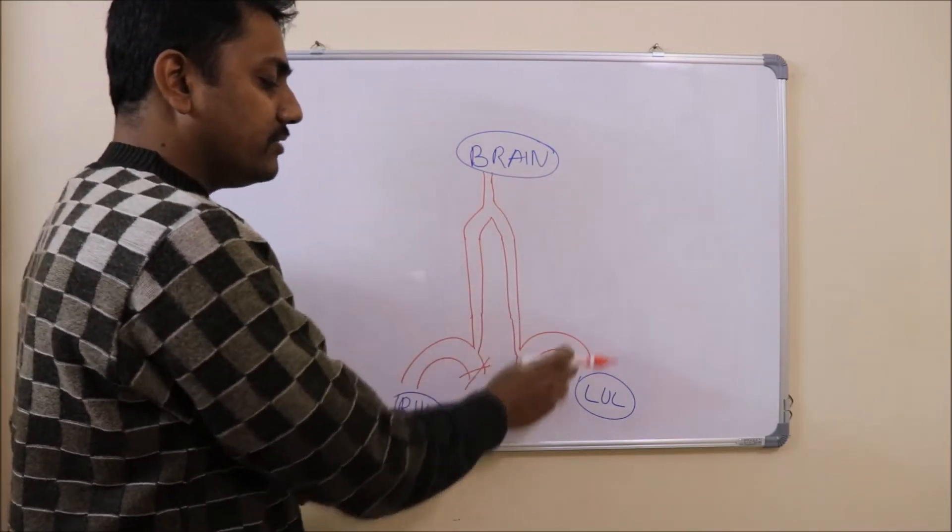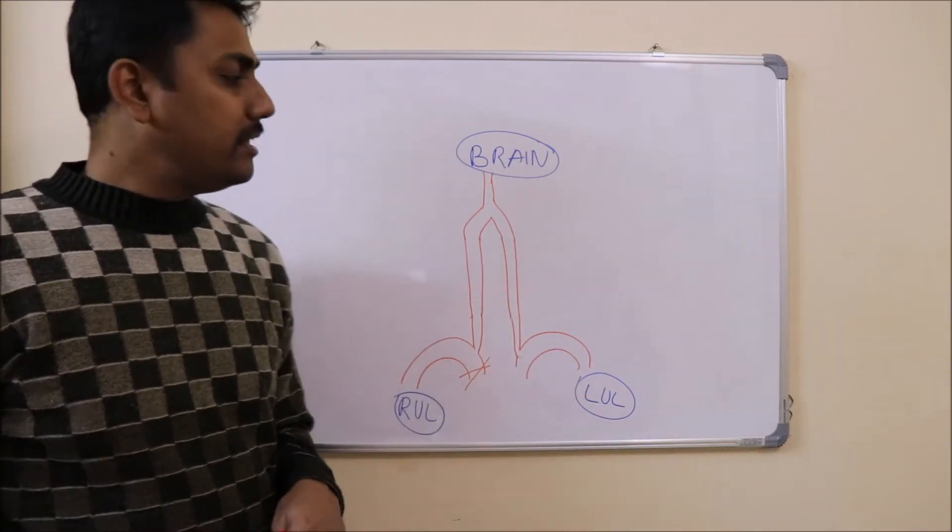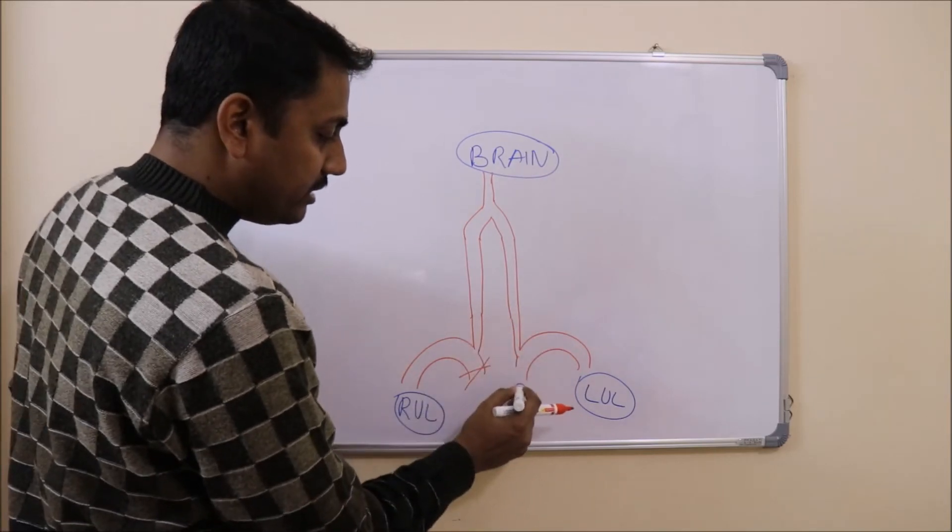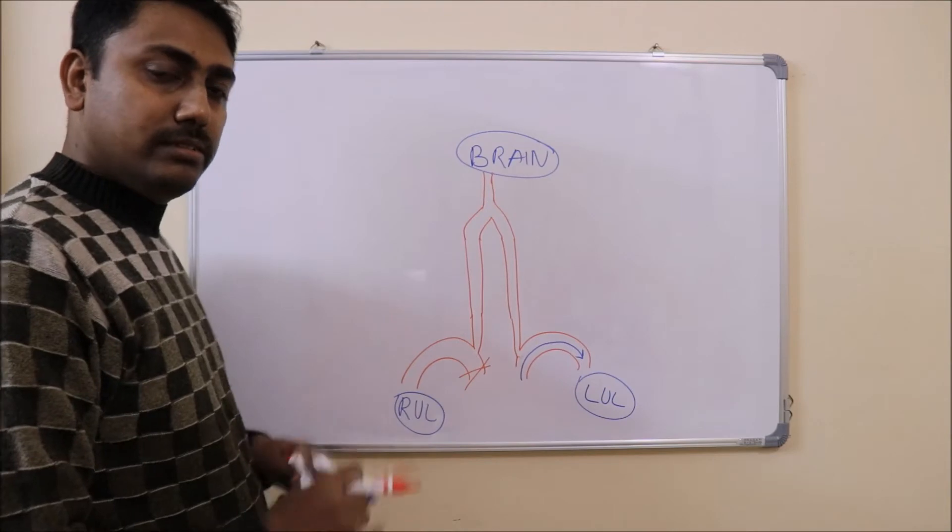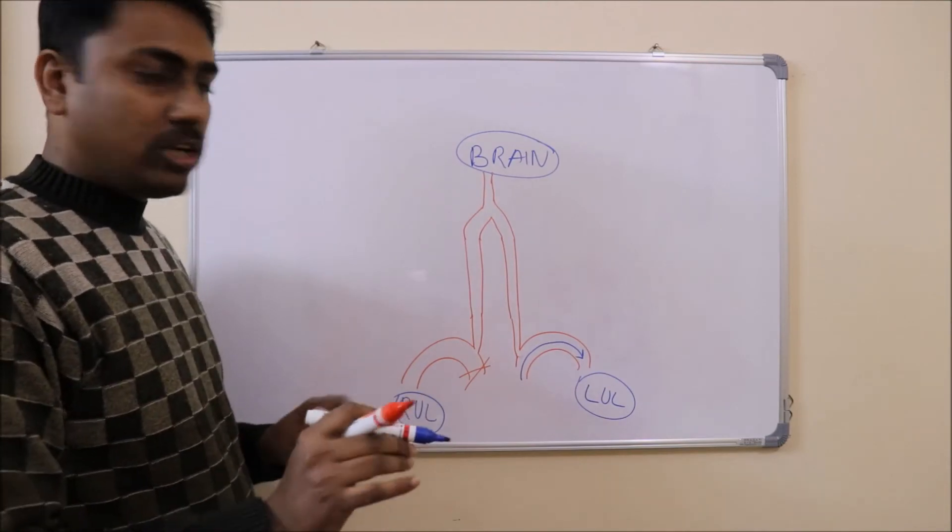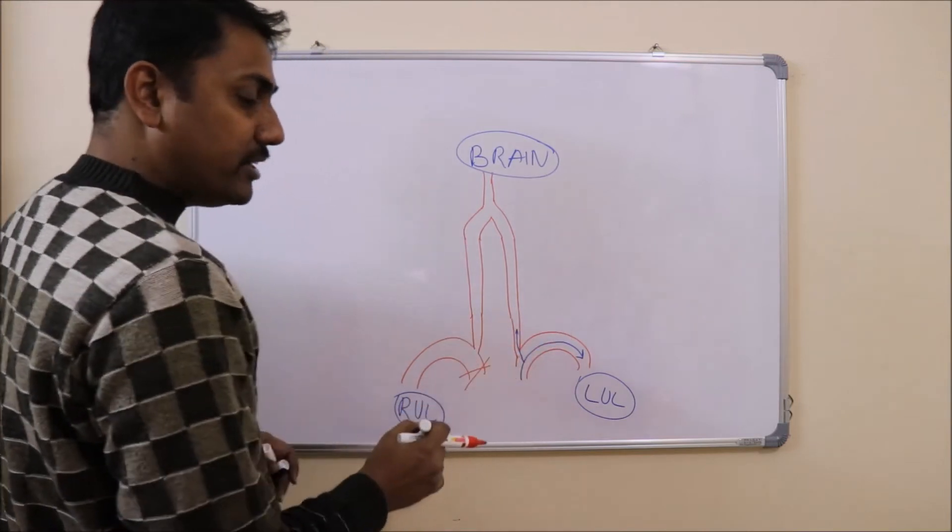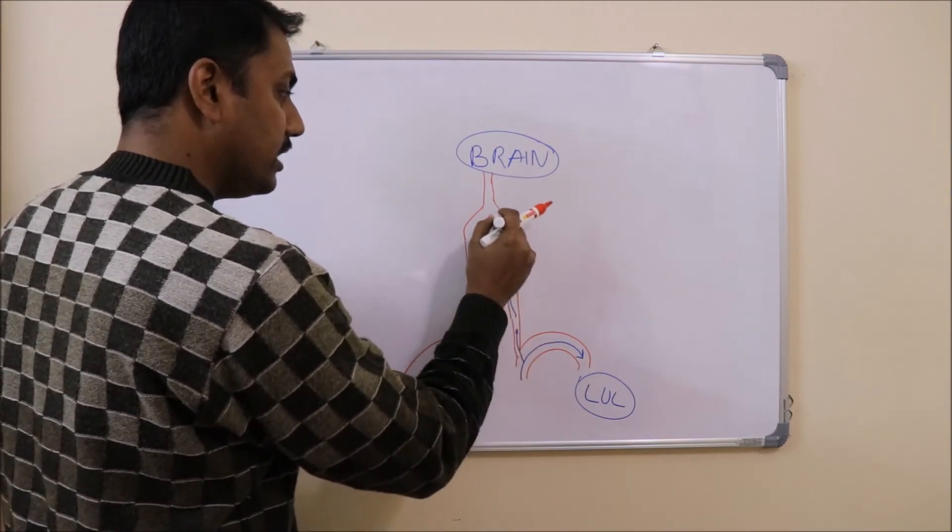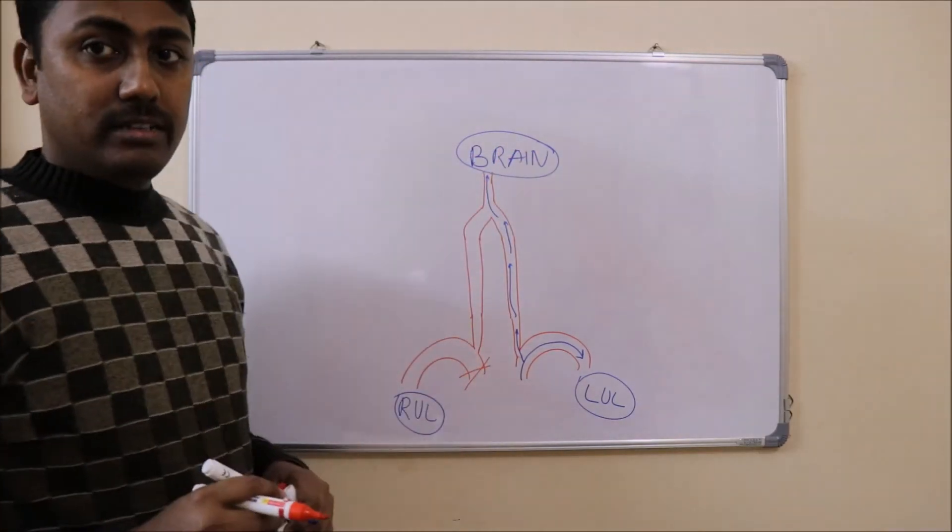If this is normal then blood will easily go to the left upper limb. The supply to the left upper limb is normal. The blood will also go through the left vertebral artery and supply the brain.